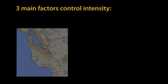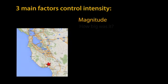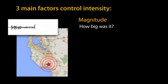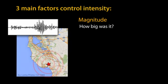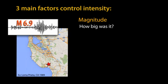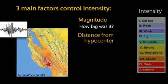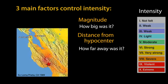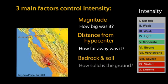Intensity is controlled by three main factors: the magnitude — how big the earthquake was — distance from the hypocenter, which means intensity varies from place to place, and the local rock and soil conditions.